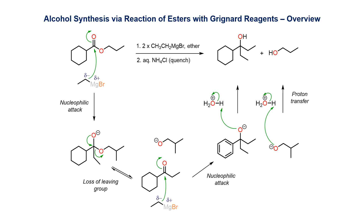The overall pathway for this conversion involves the nucleophilic Grignard reagent attacking the carbonyl group of the ester. This forms a tetrahedral intermediate, which then collapses with loss of the alkoxide leaving group to give a ketone. The electrophilic ketone is then attacked by a second equivalent of the Grignard reagent to give a tertiary alkoxide.